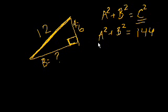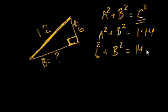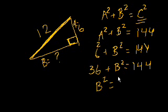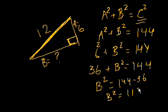So we know what A is. So we get 6 squared plus B squared is equal to 144. So we get 36 plus B squared is equal to 144. B squared is equal to 144 minus 36. B squared is equal to 112.